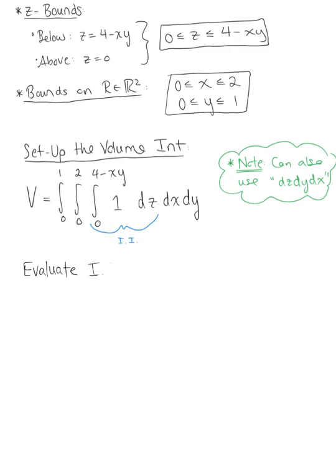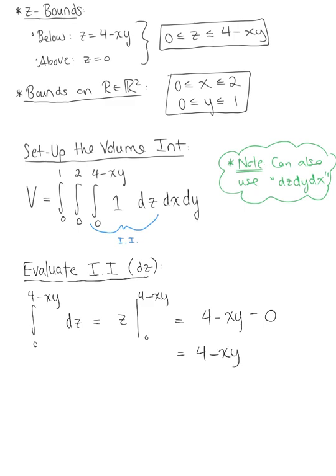We want to evaluate the inner integral, which is with respect to z. The integral from 0 to 4 minus xy of dz integrates to z from 0 to 4 minus xy, which leaves us with 4 minus xy minus 0. We can just say this equals 4 minus xy.